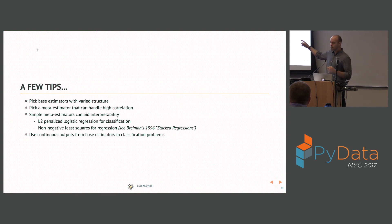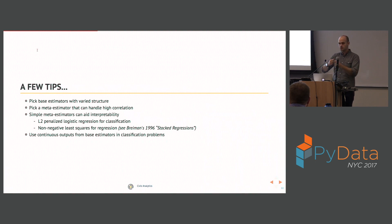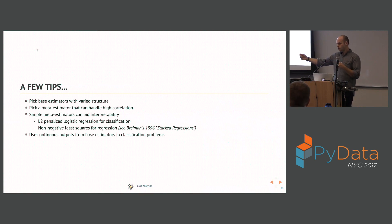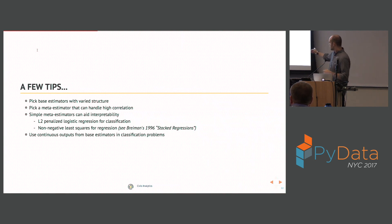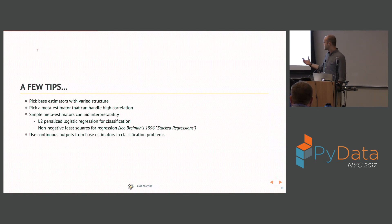The last tip: for classification problems, you want to use continuous outputs. Rather than using a binary 0/1 label fed into your meta-estimator, use the output of the decision function or predict_proba — they provide some level of confidence about which class the model thinks your observation is in. In our stack classifier, we built it so it uses decision function first, then predict_proba, then predict. This follows the conventions in the CalibratedClassifierCV class in scikit-learn.